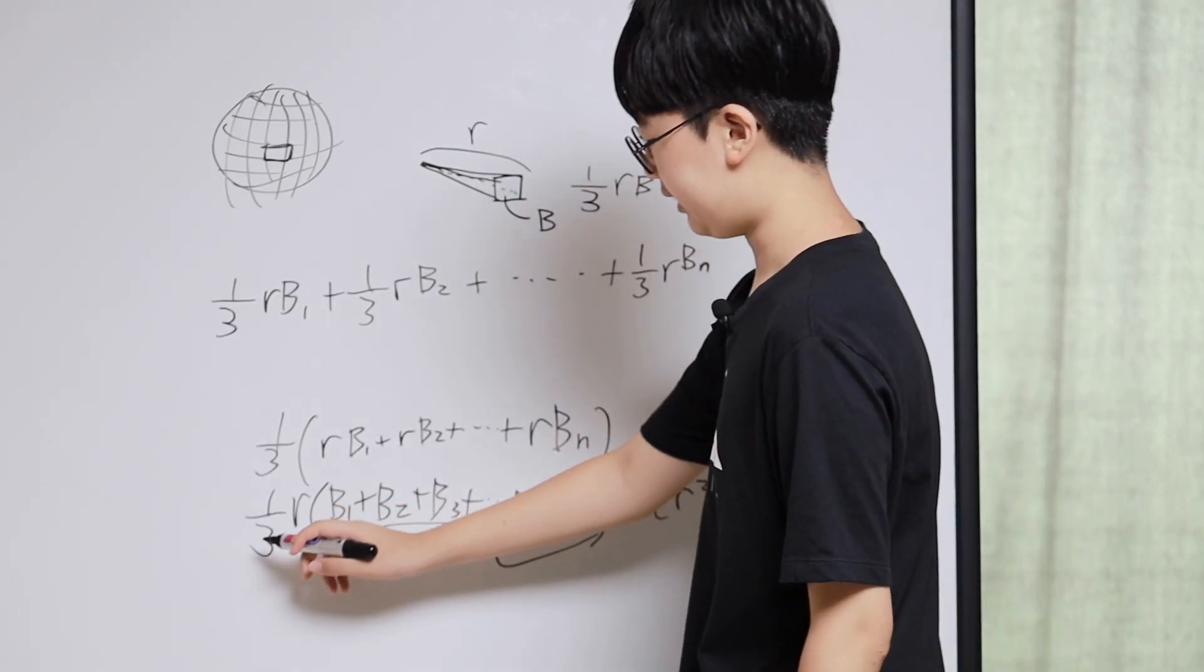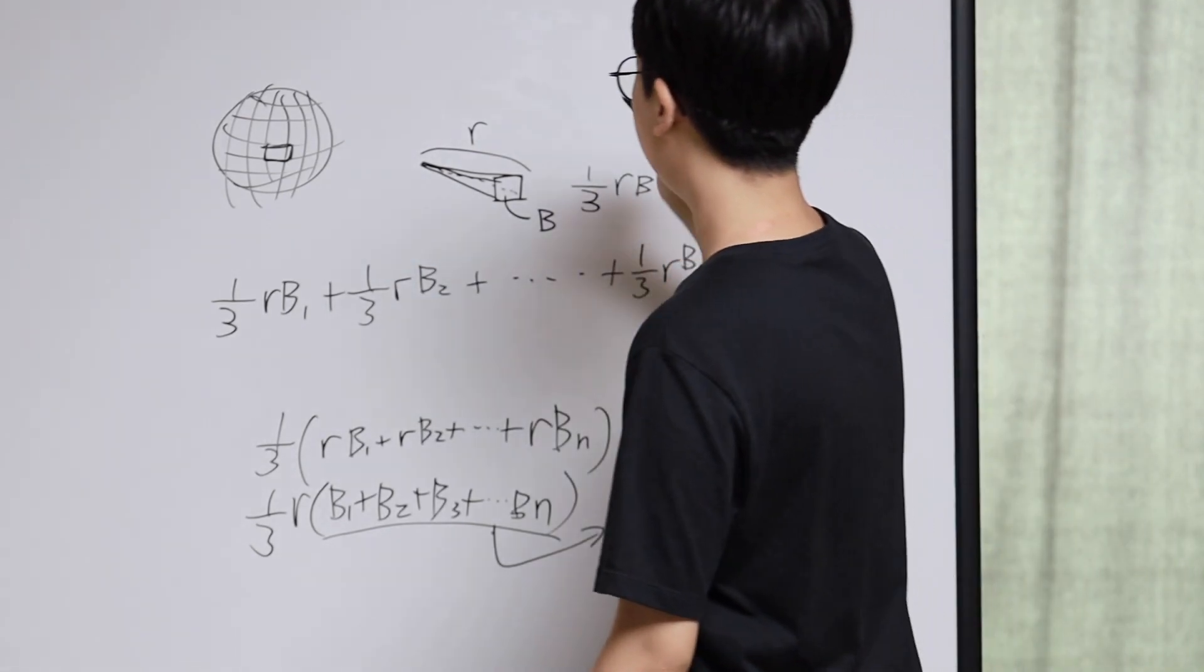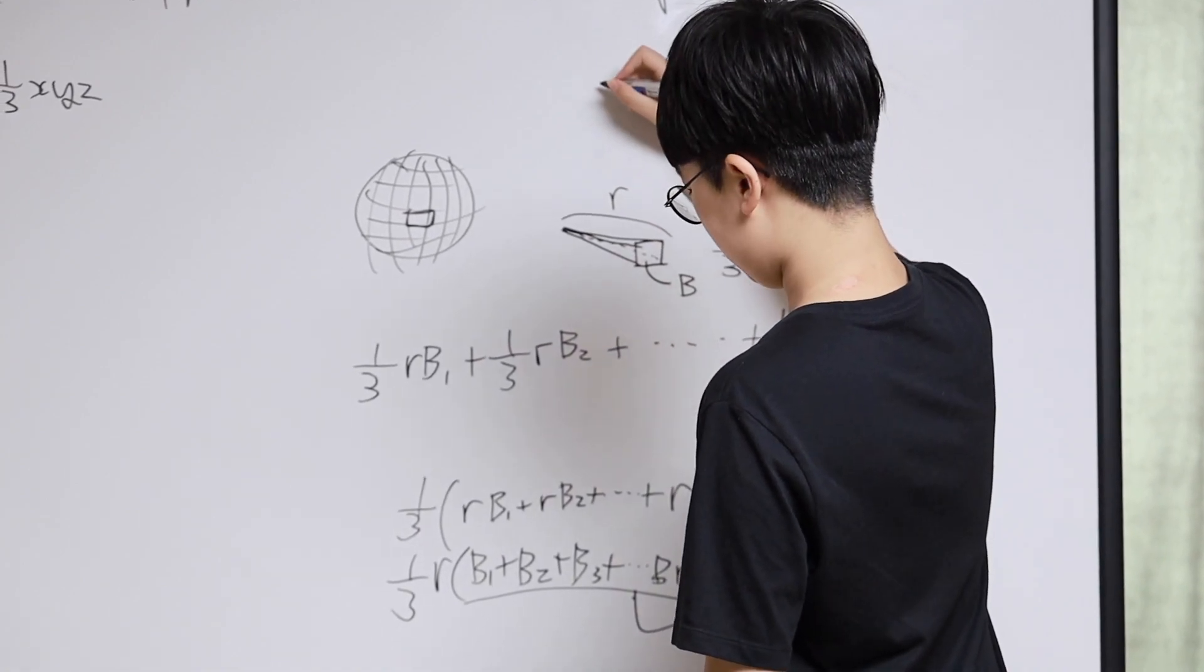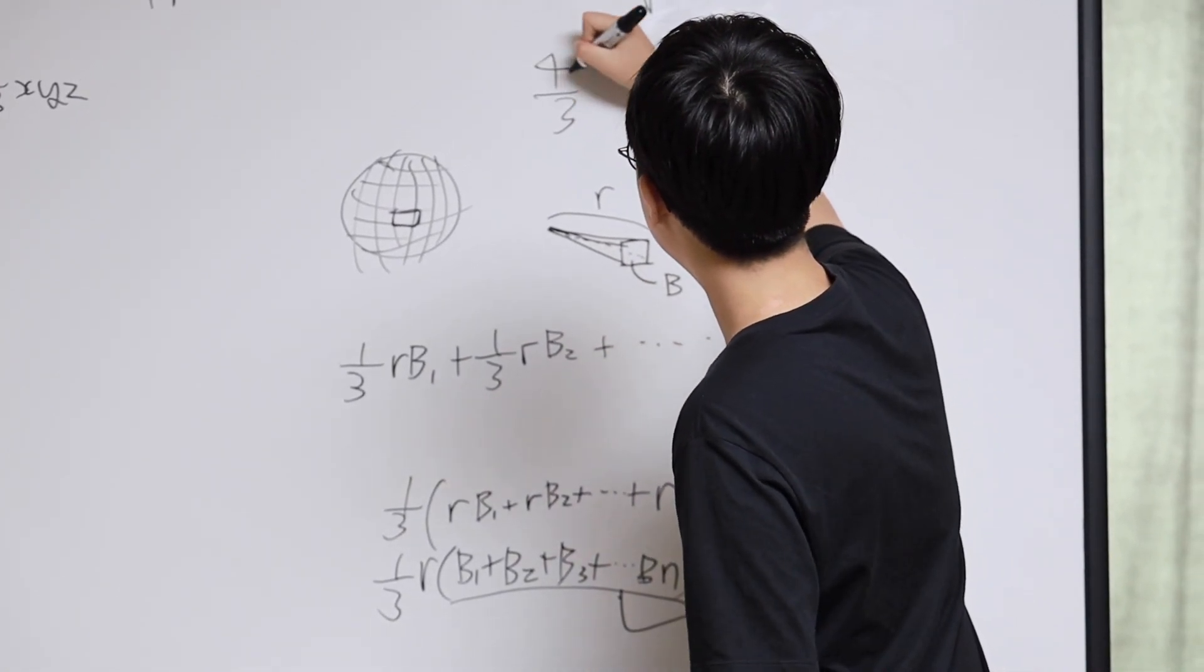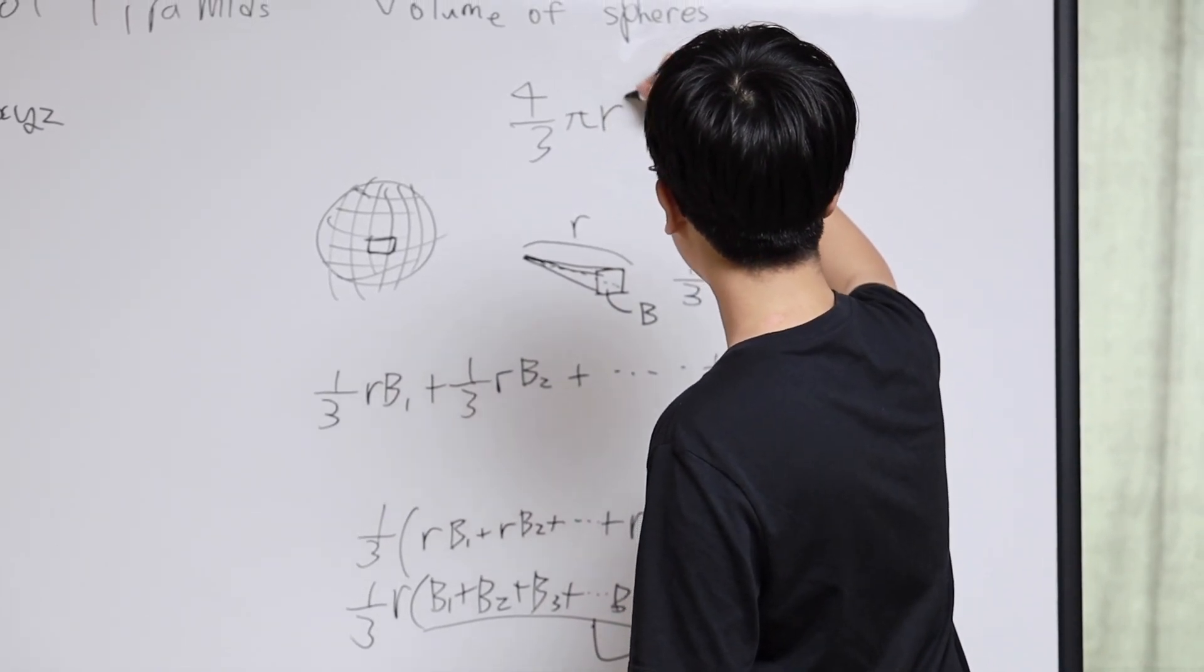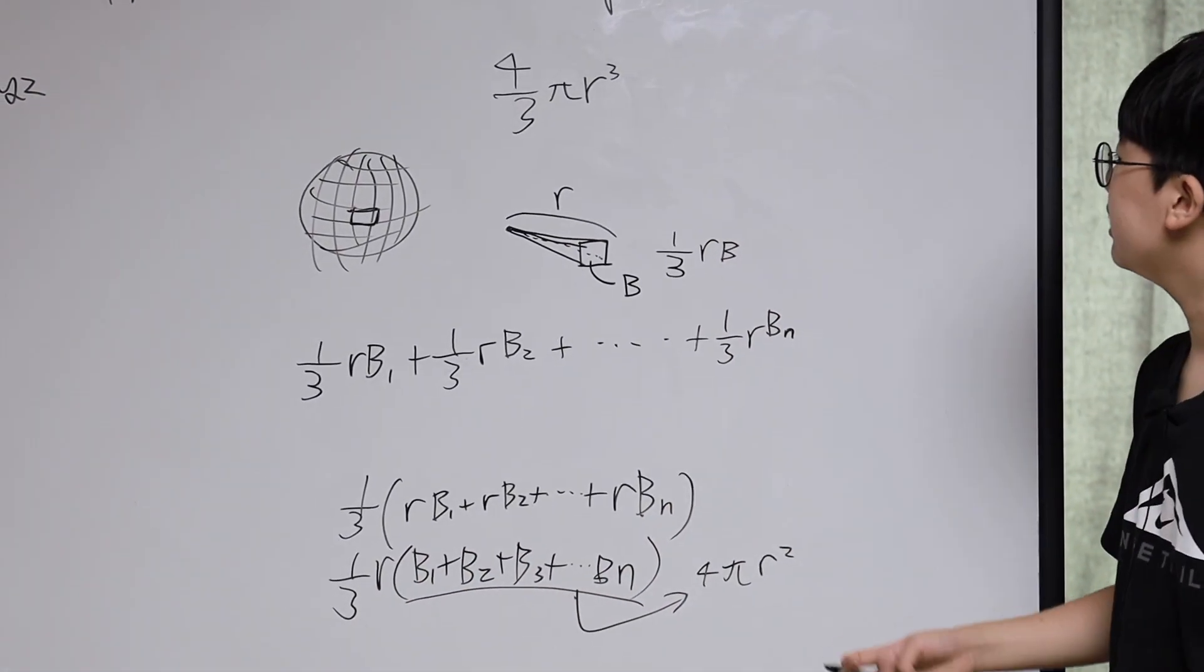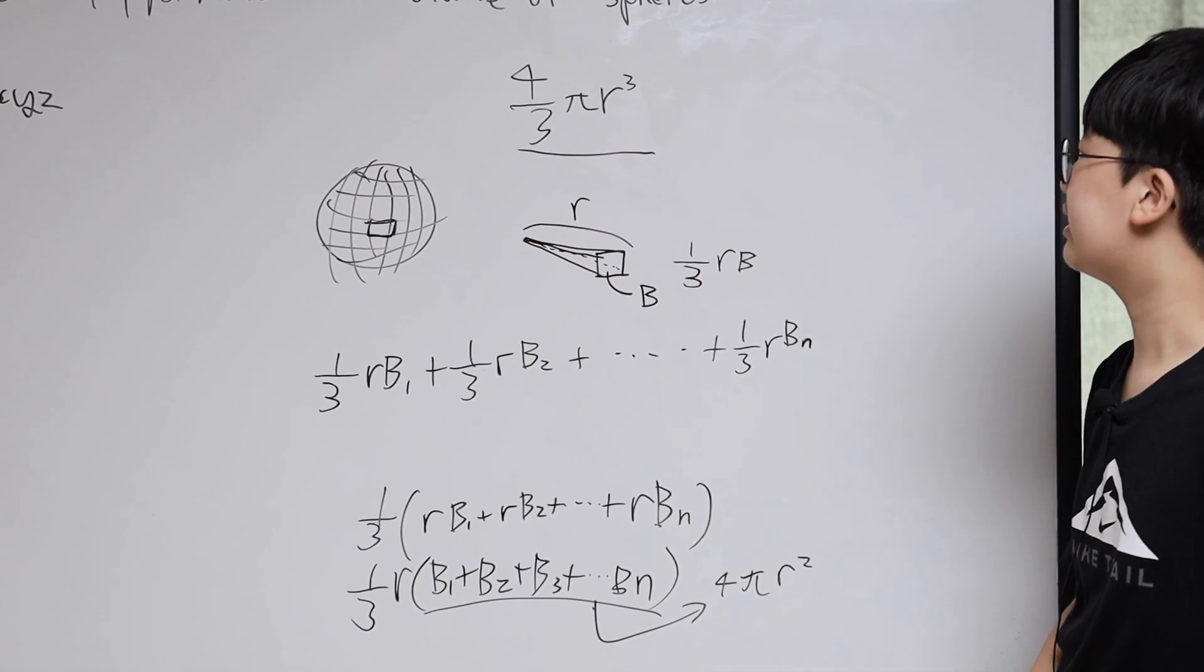So, a third of R multiplied by 4 pi r squared. This would be 4 over 3 multiplied by pi r cubed, because r multiplied by r squared. So it becomes this.